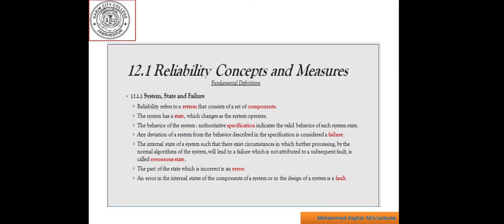The second topic is system state and failures. In the context of reliability, a system refers to a mechanism that consists of a collection of components and interacts with its environment by responding to stimuli from the environment with a recognizable pattern of behavior. Each component of a system is itself a system, commonly called a subsystem.